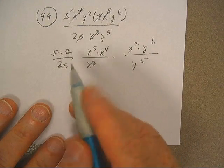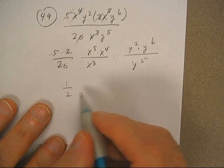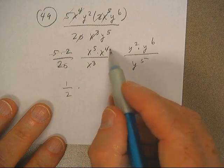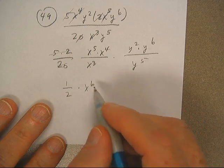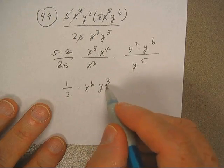So 10 goes into 20 twice. Here I've got 9 minus 3. That's going to be x to the sixth. I've got 8 minus 3. It's going to be y to the third.